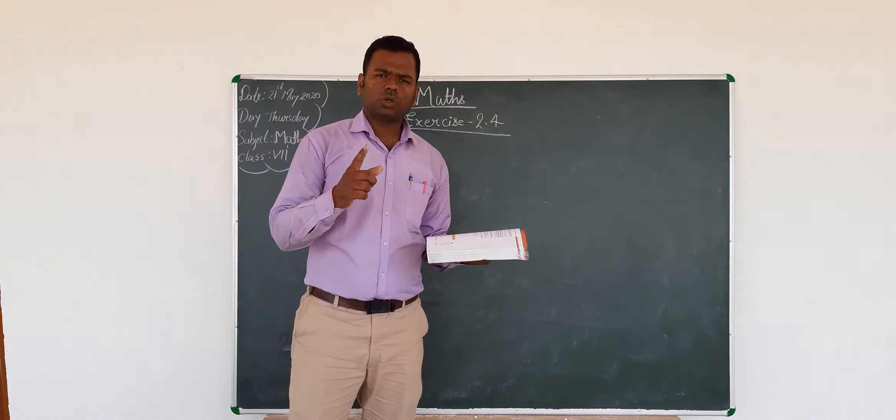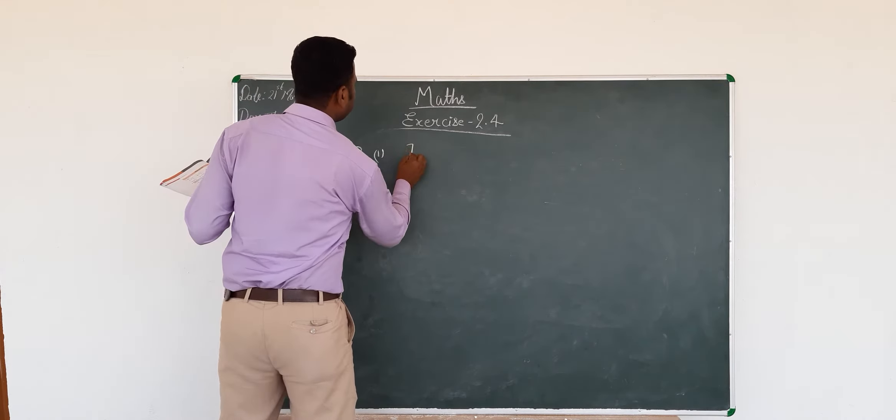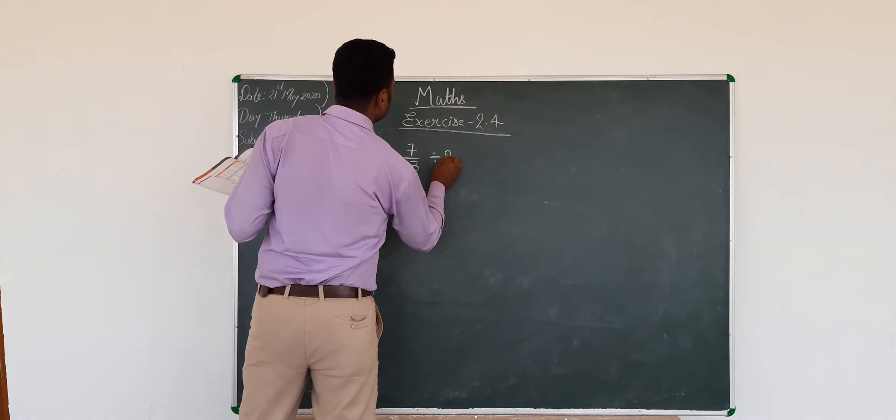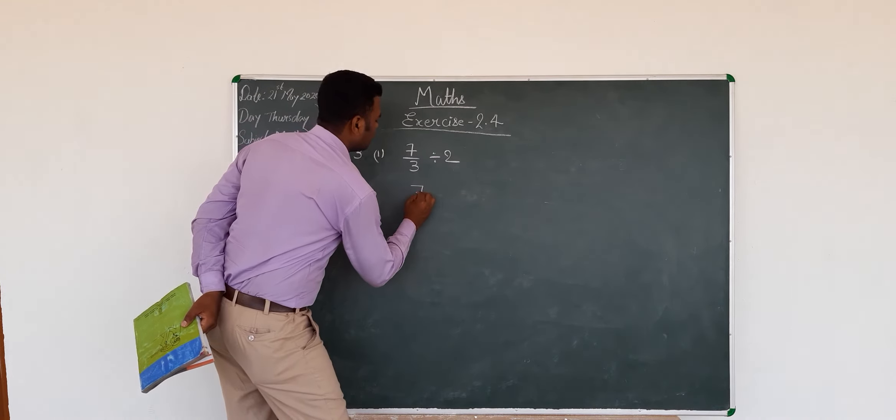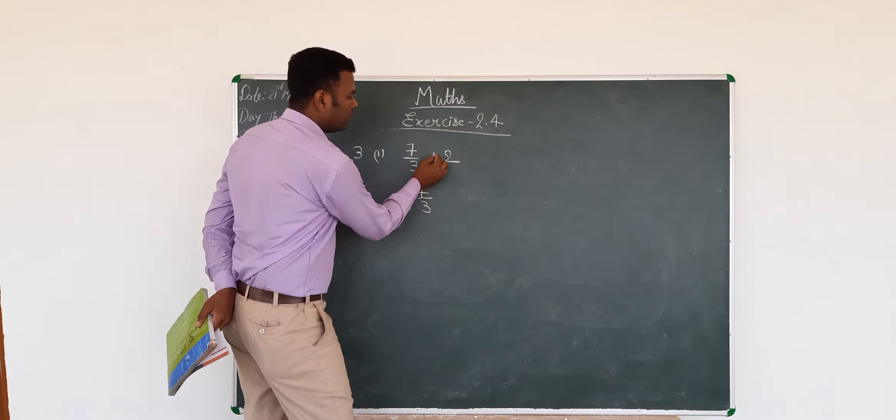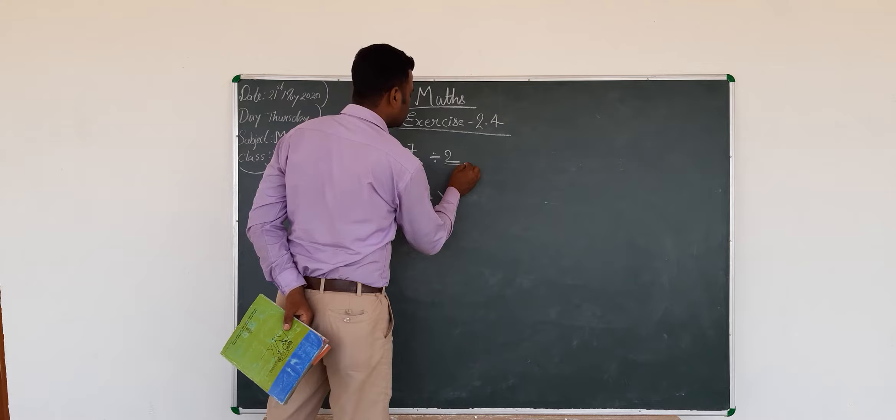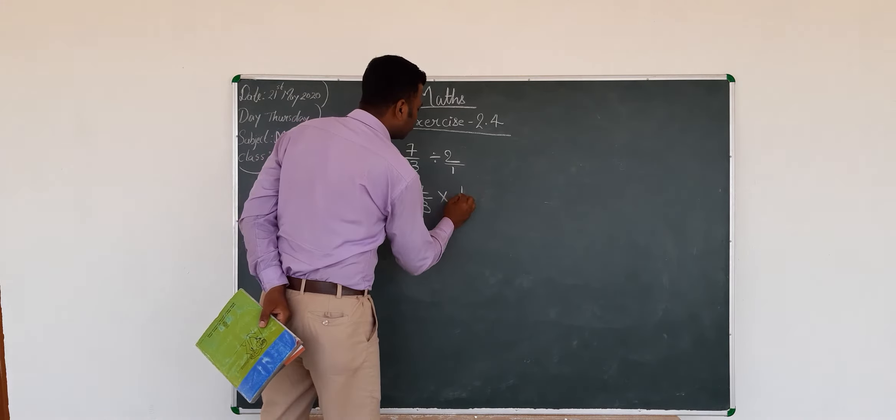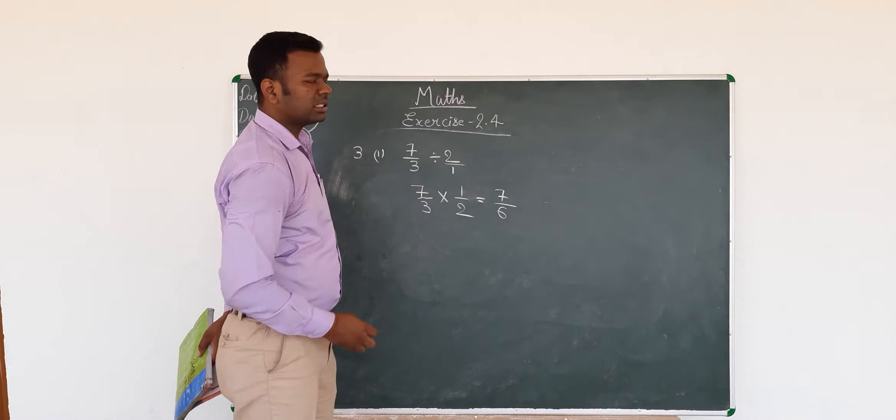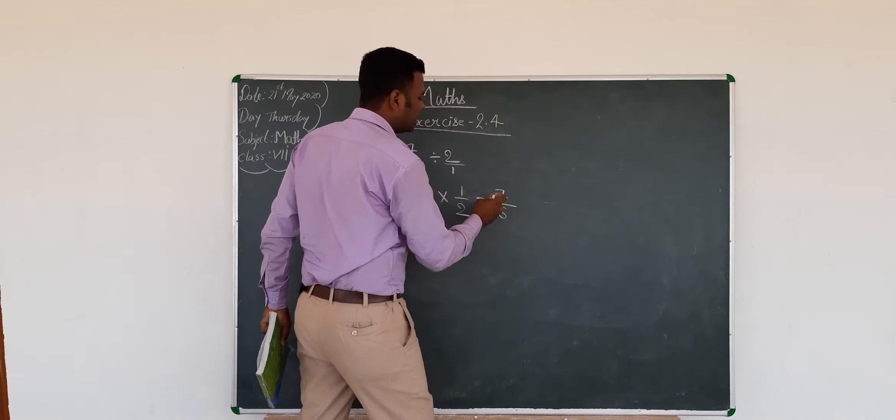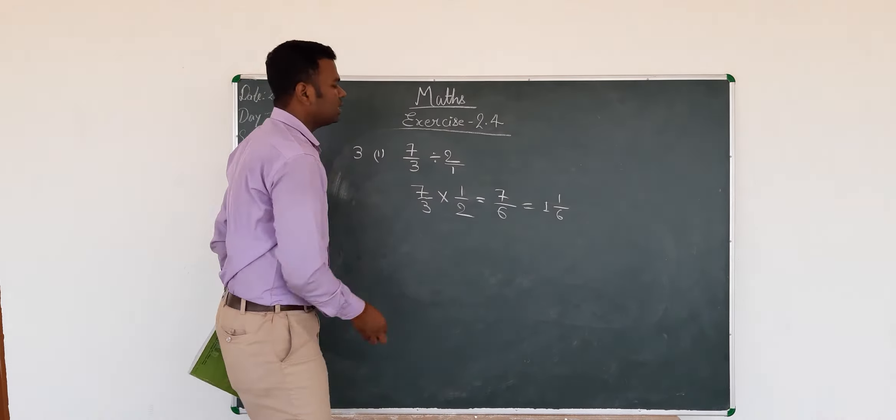Now look at question number 3. The first question is: Find 7/3 divided by 2. What will you get? I have already told you, when you change the sign of division into multiplication, you have to write the reciprocal of this digit. 2/1 becomes 1/2. So it equals 7/3 multiplied by 1/2, which is 7 into 1 is 7, 3 into 2 is 6. 7/6 is the answer, and you can also write it as the mixed fraction 1 1/6.